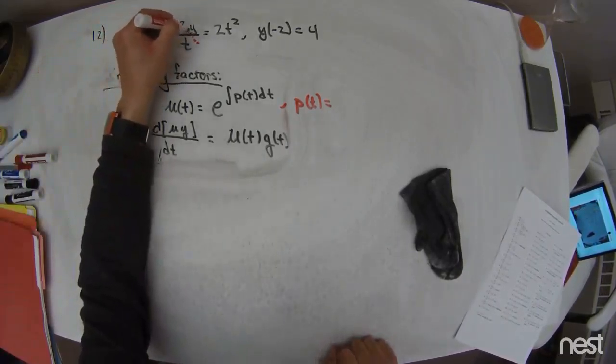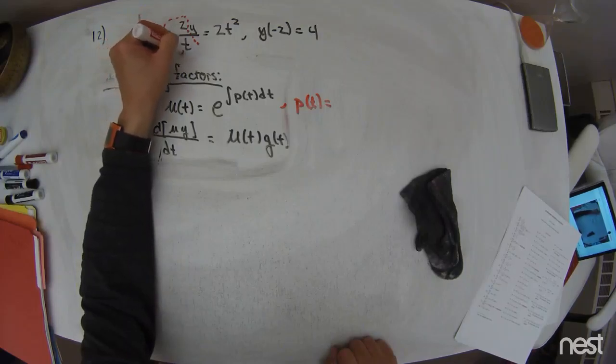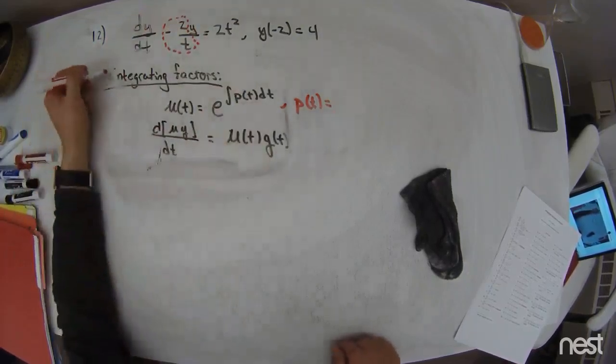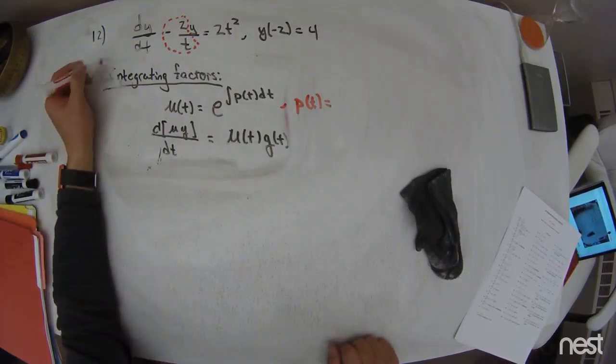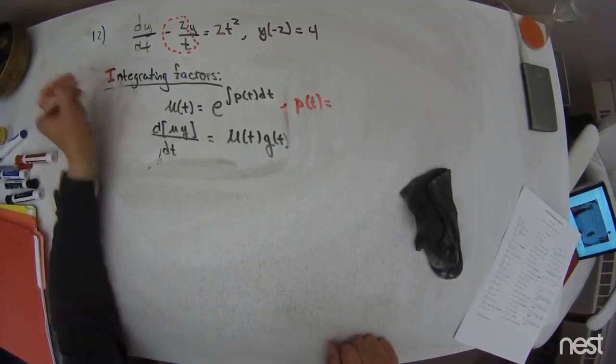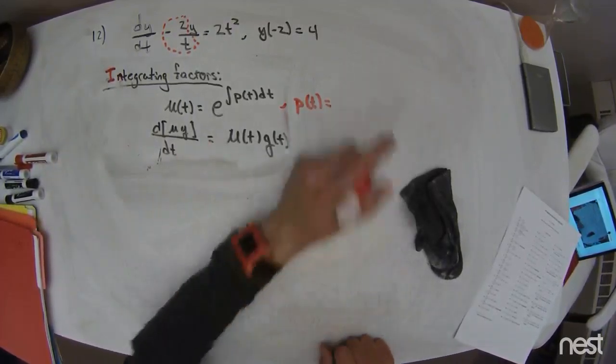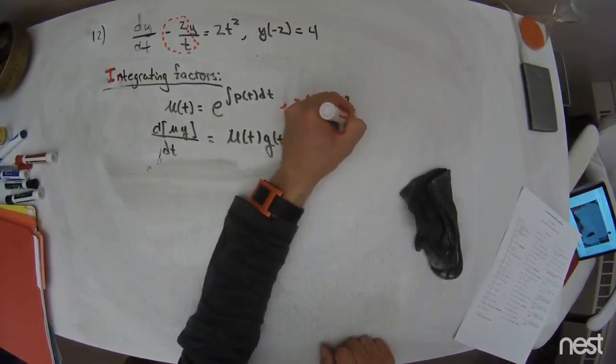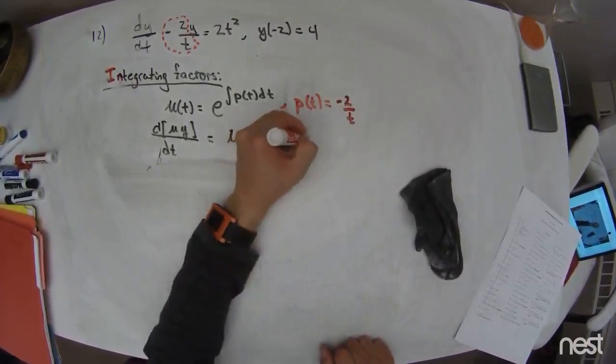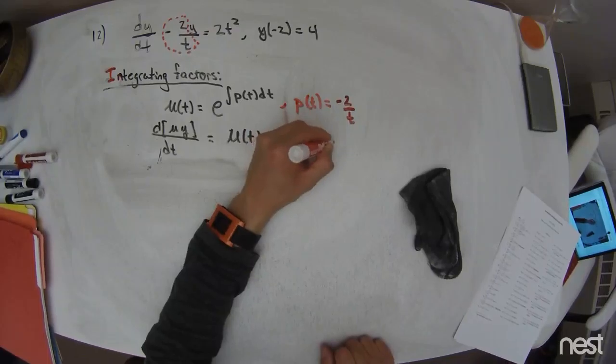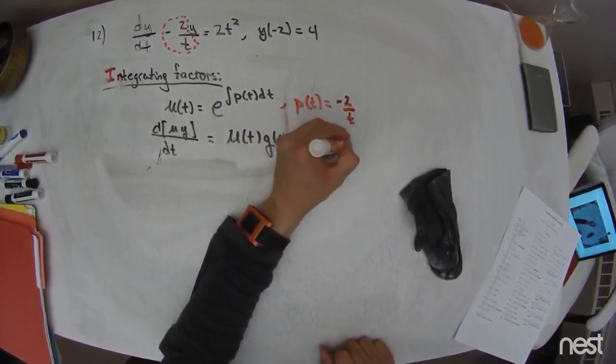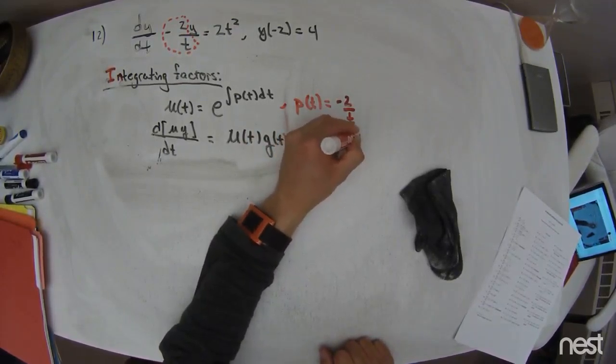There's some variable coefficient structure on the y term, which all this tells me use integrating factors. And integrating factors is something I just did, so I have this work written up from before. p of t is going to then be negative 2 over t, because this is written in standard form. And g of t is not going to be an exponential function as it was before. It's 2 times t squared.